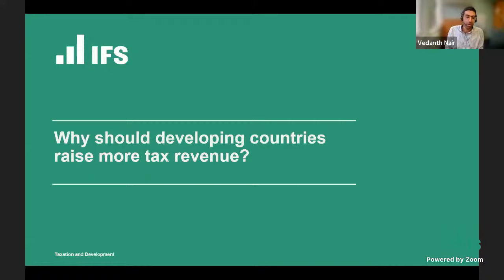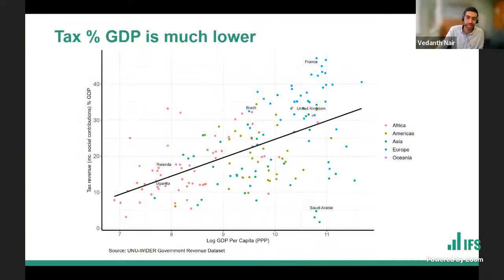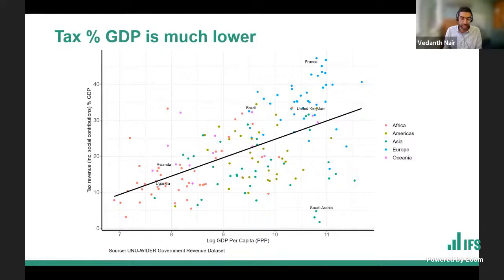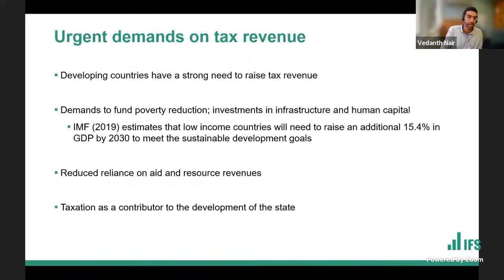First question: why should developing countries raise more tax revenue? In the UK, we raise 35% of our GDP in taxes — a little bit more in other European countries like France. In the countries we work in, Uganda and Rwanda, that number is between 10 and 20%. When we talk to people in government, pretty much everyone shares the same goal: they want to increase this number so they can fund education, health, and crucial investments in the development process. Developing countries have a strong need to raise tax to GDP.